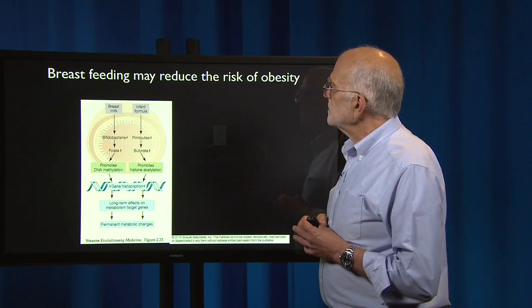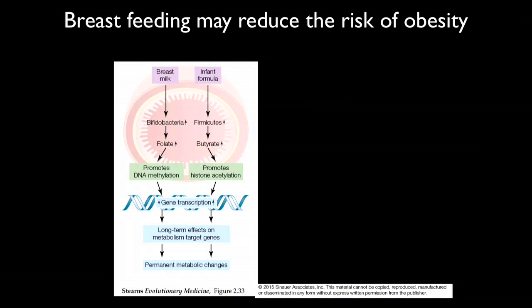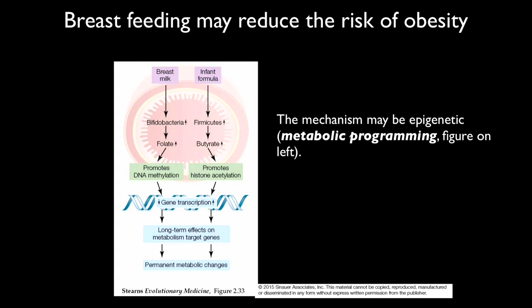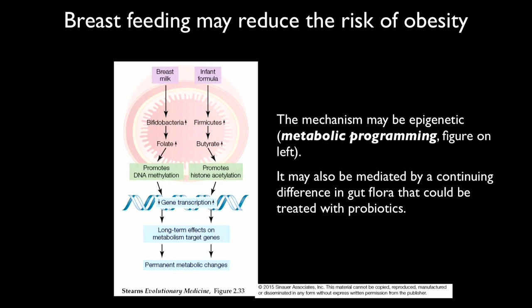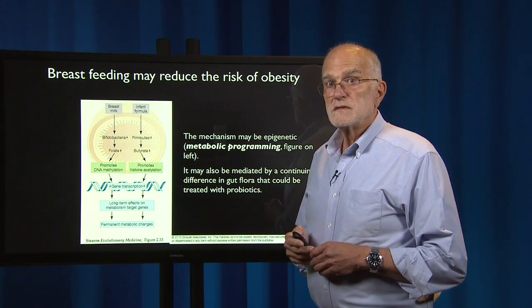Breastfeeding may also reduce the risk of obesity. The hypothesis is that breast milk supports Bifidobacteria and increases folate, while infant formula supports Firmicutes bacteria and increases butyrate. Breast milk thereby promotes DNA methylation, while infant formula promotes histone acetylation — affecting gene transcription in different ways with long-term effects on metabolism target genes, potentially leading to permanent metabolic changes. The mechanism, if true, is epigenetic, and might be mediated by continuing differences in gut flora that could be treated with probiotics.